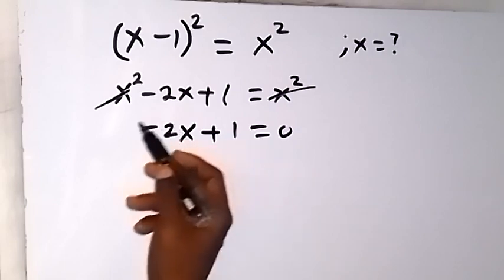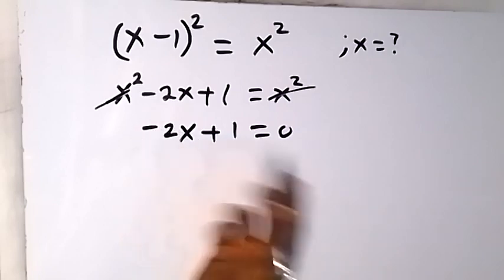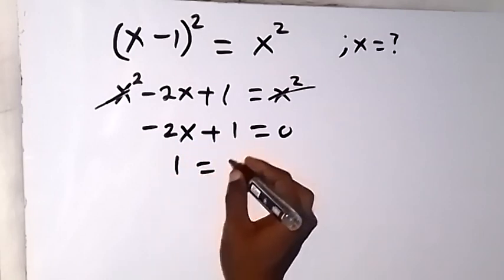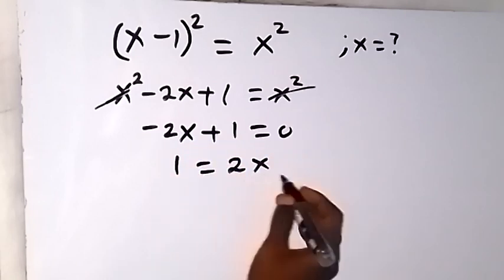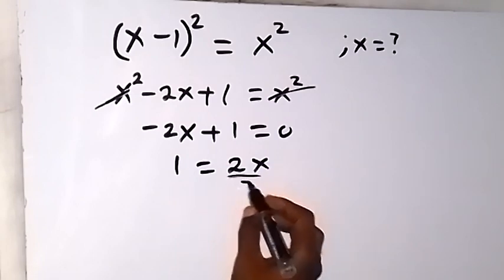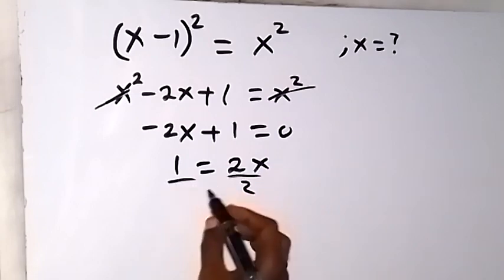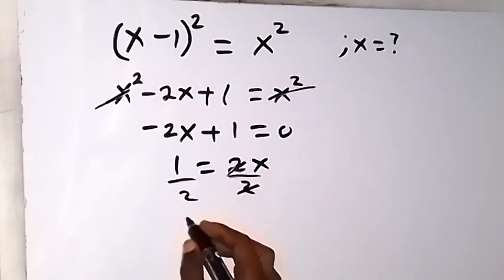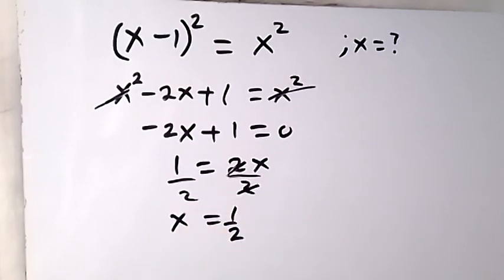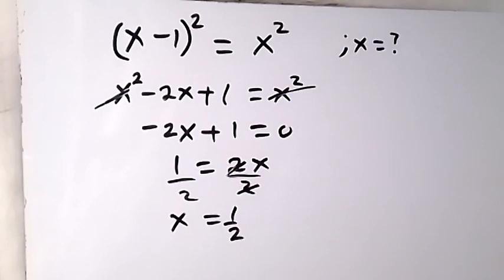Then we have minus 2x plus 1 equals to zero. Let's take minus 2x to the other side, so that it becomes plus. So we then have 1 equals to 2x. We are finding x, so we can divide both sides by 2, such that x will now be equals to 1 over 2, which is half. So we can check from the problem given and see whether the solution is half.